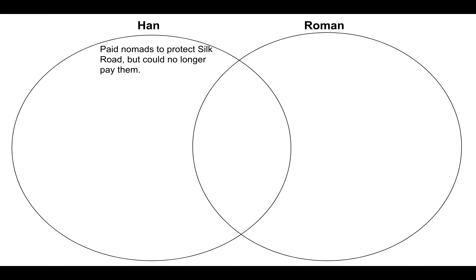We are going to look at the fall of the Han Dynasty. We learned that the Han Dynasty had been paying nomads to protect the Silk Road, to keep them safe so people could wander on the Silk Roads and trade. Well, the Han Dynasty government could no longer afford to pay the invaders, so they stopped protecting the roads and started attacking people traveling on the roads. And that's not good for those people, and it's certainly not good for trade.